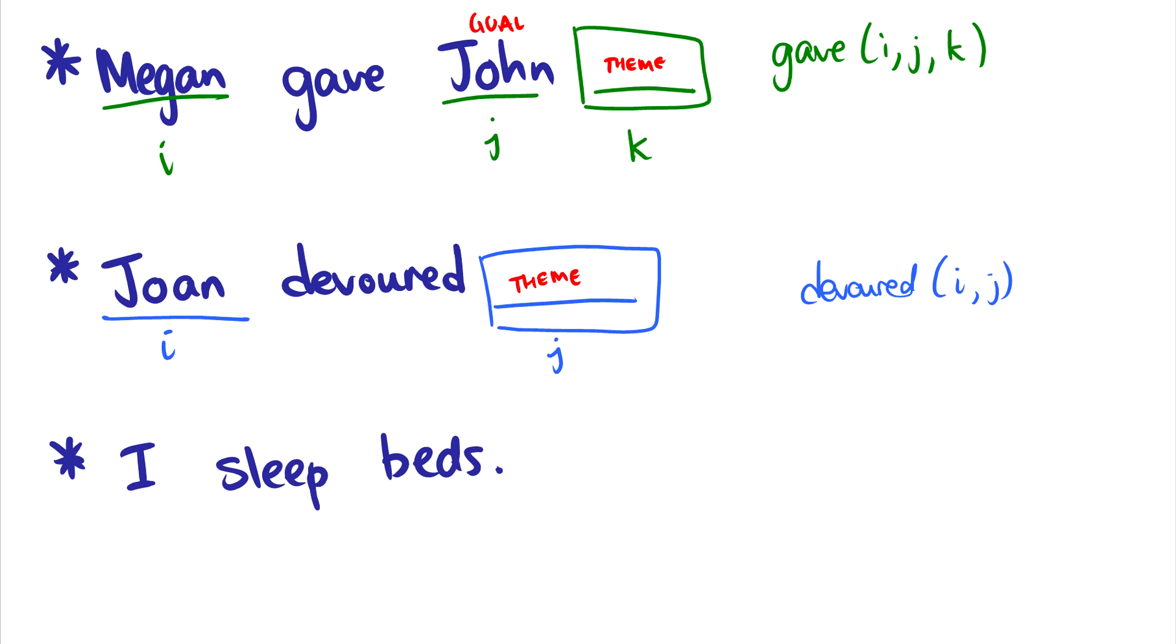What about this third sentence? I sleep beds. Yeah, this one is also kind of bad. Why? Because sleep is intransitive. Sorry, this should be an i. So sleep takes one argument. It takes an experiencer. The problem here is that we also have this theme here that we shouldn't have. So why do we have this theme in the sentence? We don't need a theme. Sleep cannot take another theme. It can't take a second argument.